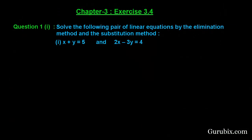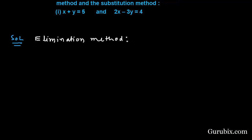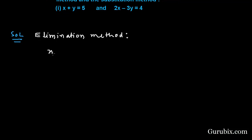Let us solve the first part of question number 1 of exercise 3.4 of chapter 3. The question says: solve the following pair of linear equations by the elimination method and the substitution method. We have to use two methods here. First, we shall apply the elimination method. The pair of linear equations is x + y = 5 (equation 1) and 2x - 3y = 4 (equation 2).